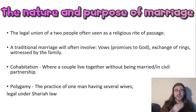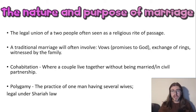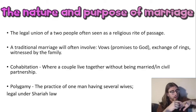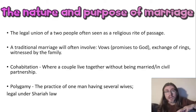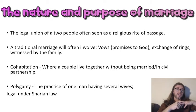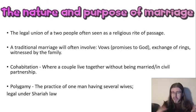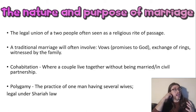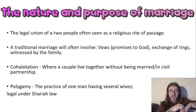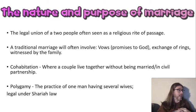A traditional marriage will often involve vows - promises to God - and an exchange of rings. The wedding ring is normally a plain gold band because it shows the love has no start and no end, and that also represents God's love for you. The engagement ring is the one normally with a diamond in it. The wedding band is just a plain band - no beginning, no end.